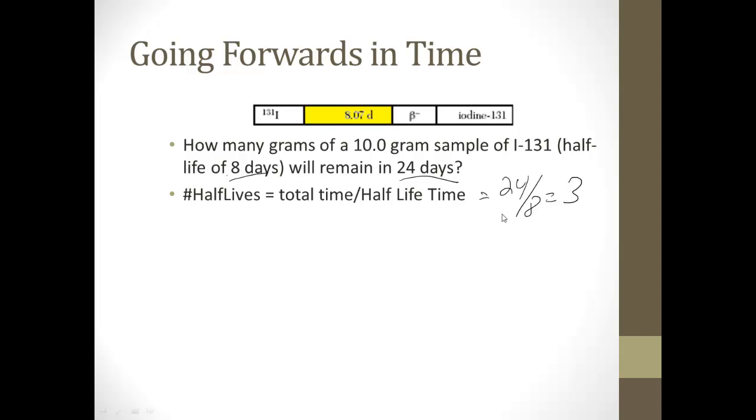That means we're going to have 3 half-lives. So we're going to cut 10 grams, which is our starting point, in half three times. So we cut it, 10 divided by 2 is 5. 5 divided by 2 is 2.5, cut in half twice, divided by 2, again, is 1.25 grams.